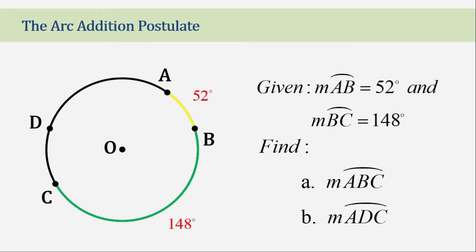So in this example, given that arc AB measures 52 degrees and arc BC measures 148 degrees, now we are asked to find the measure of arc ABC.